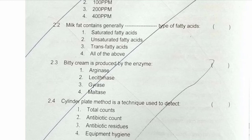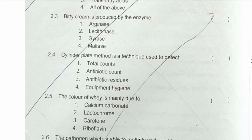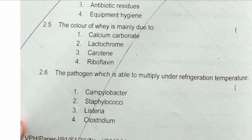Next question: cylinder plate method is a technique used to detect — this method is generally used to detect antibiotic residues, especially penicillin. Next question: the color of whey is mainly due to — the answer is the fourth option, riboflavin (Vitamin B2), which gives whey its greenish color.